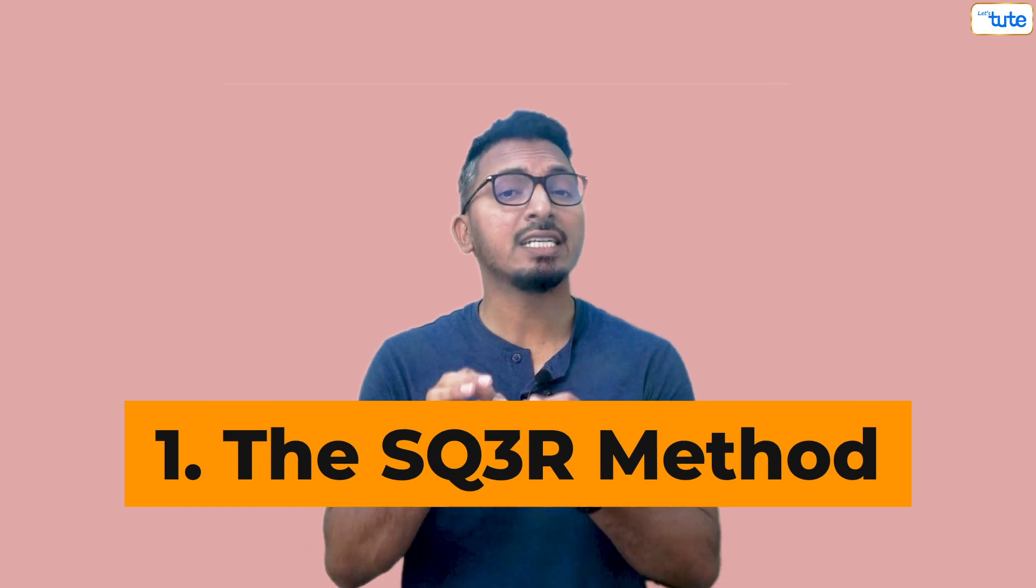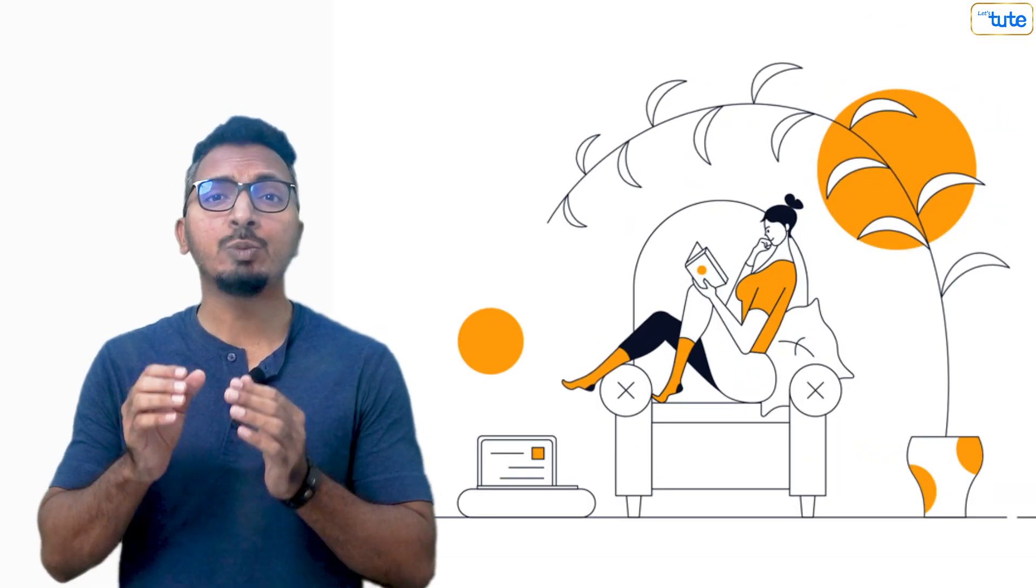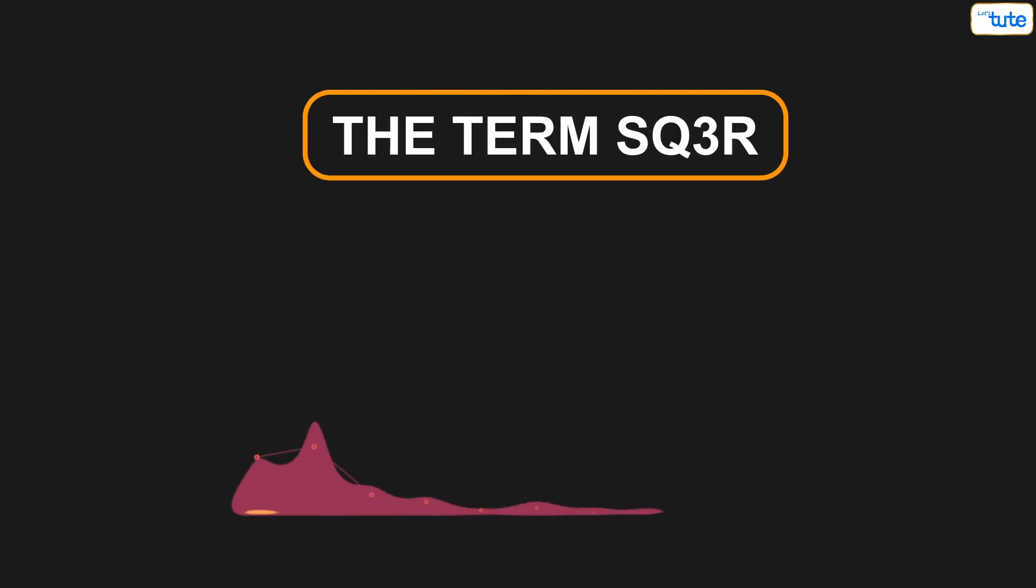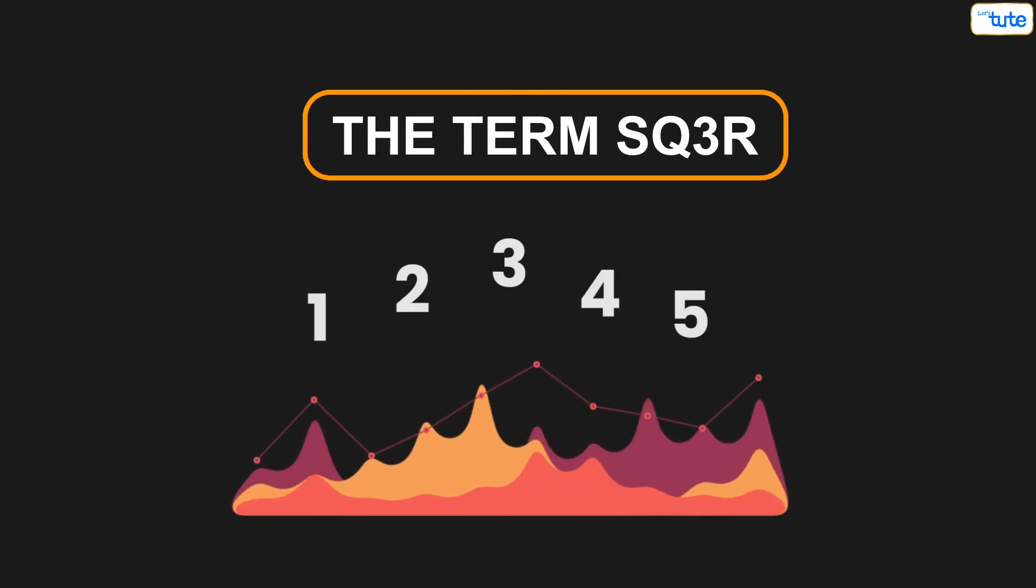First technique, SQ3R method. The best way to study is to pick up on key elements rather than the whole chapter and remember just that. That's how this method works. The term SQ3R stands for 5 levels of reading comprehension.